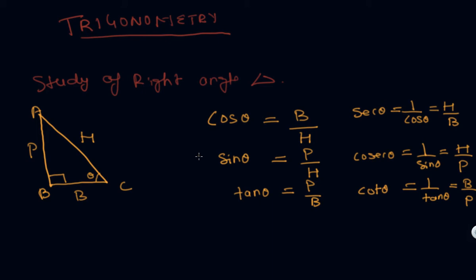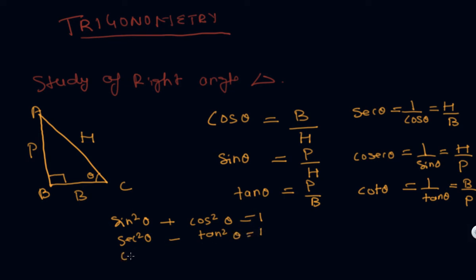These were the basic functions we studied in the 10th standard. Along with three more formulas: sin squared theta plus cos squared theta equals 1; sec squared theta minus tan squared theta equals 1; and cosec squared theta minus cot squared theta equals 1.